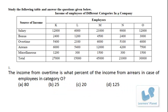The income from overtime is what percent of the income from arrears for employee category O? Overtime is 6,000 and arrears is 7,500. So the calculation is 6,000 by 7,500 × 100. Simplifying: 60 by 75, cancel by 15 to get 4 by 5, which is 80%. Quite a simple problem you can do it mentally.